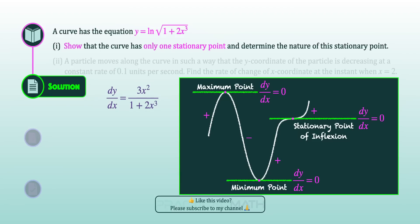We will now set our derivative function equal to 0. Solving for x gives us a single value of 0. Replacing x = 0 into the curve equation, we get y = 0 as well. Thus, the coordinates of this stationary point are the origin (0, 0). Since there is only one pair of coordinates, we have shown that the curve has only one stationary point.